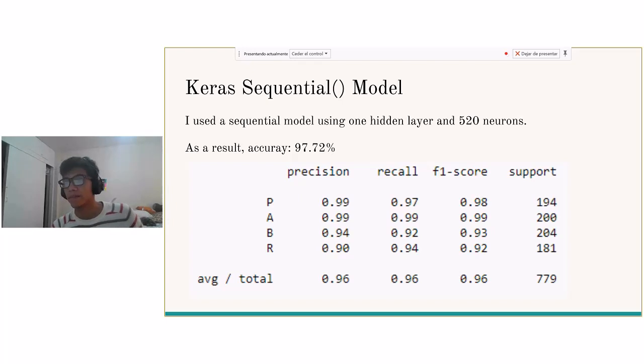We can see that the last two letters, the B and the R, are also the most difficult to predict. But using this model, we clearly could improve these metrics.